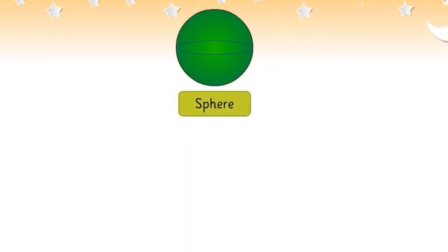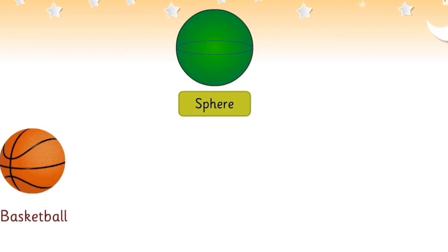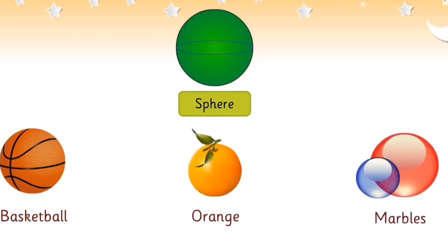This is a sphere. A basketball, an orange, and marbles are examples of a sphere.